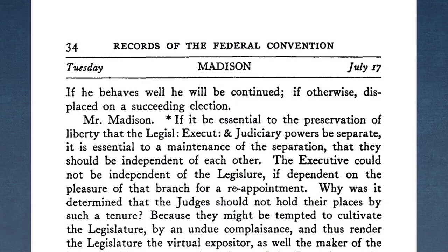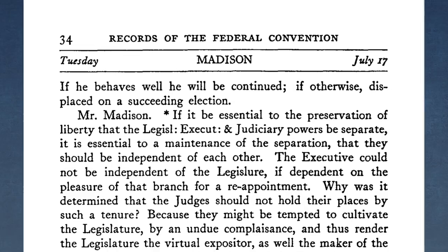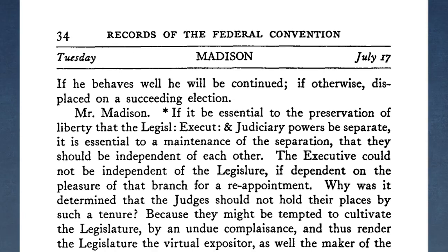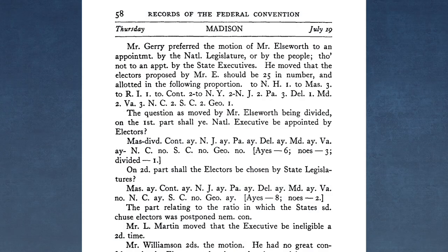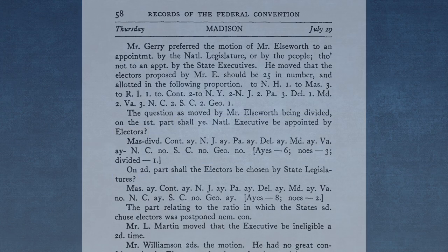For example, this paragraph shows James Madison opposing the legislature method. One vote is each time a delegate motioned for a vote and the state delegations voted on a particular method, as seen here where the convention delegates voted on the electors method.